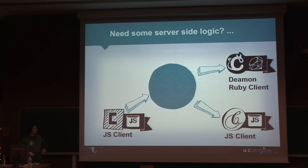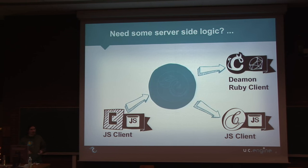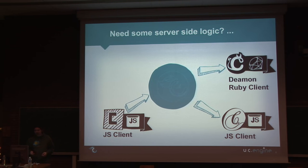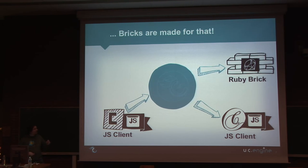For example, there is a conversion of PDF to images that you can't do with a JavaScript API without having client-side logic. So to add this, you write a daemon client in another language to speak with the server. And a UCEngine daemon client is what we call a brick — a process that needs to be allowed to do specific things.